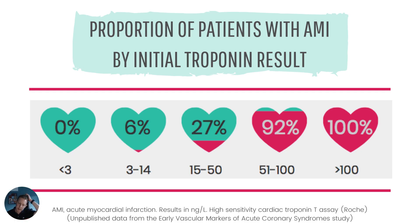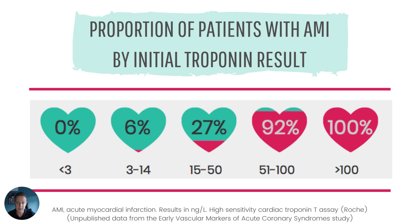TMAX also has other advantages. It handles troponin as a continuous variable, meaning the higher the troponin, the higher the probability of MI as an output — and that reflects reality. Data from one of our studies show the prevalence of MI based on the first troponin concentration, and there's a clear continuum of risk. We lose that richness of information if we set the cutoff at any one point. Treating troponin as a continuous variable has a lot of attraction, and we're likely to see more models doing this in the future, not just TMAX.